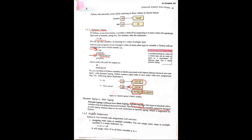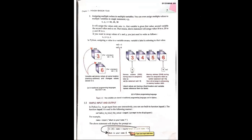Multiple assignment means assigning the same value to multiple variables — like assigning the value 10 to variables a, b, and c simultaneously. The next concept is assigning multiple values to multiple variables — for example, assigning 10 to x, 20 to y, and 30 to z all at once.